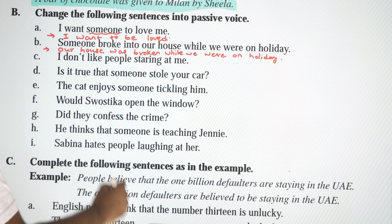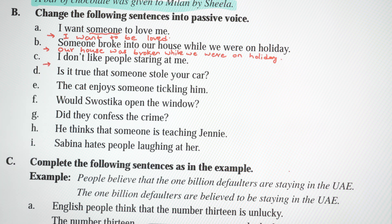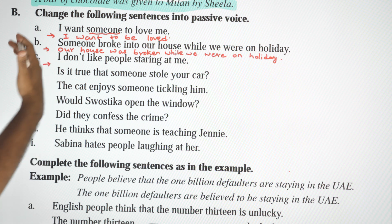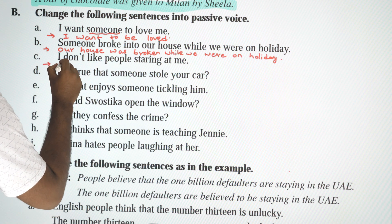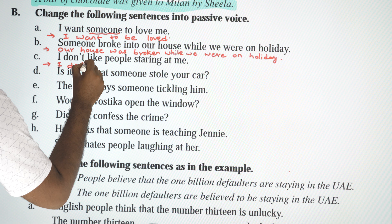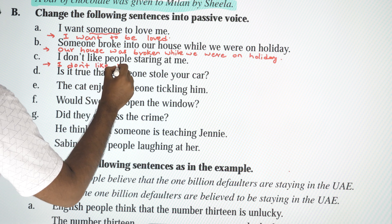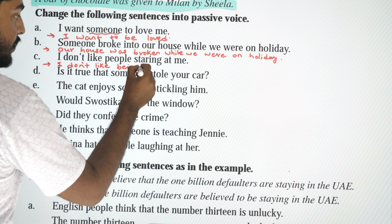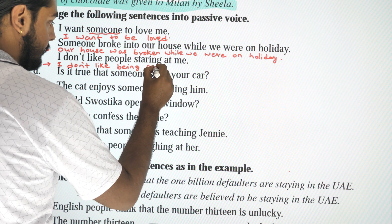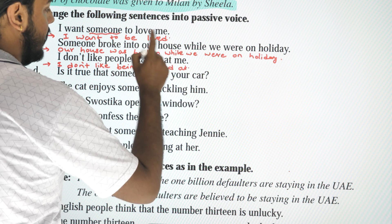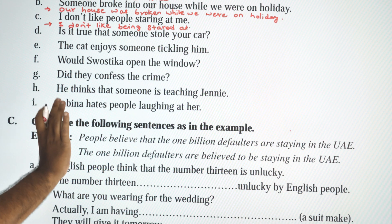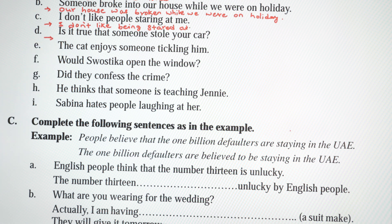Next: 'I don't like people staring at me.' Passive using gerund form: 'I don't like being stared at by people.' Here 'being stared at' is the gerund passive form.